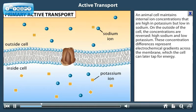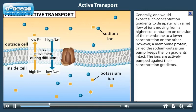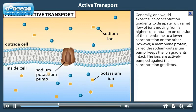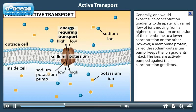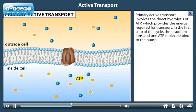Generally, one would expect such concentration gradients to dissipate, with a net flow of ions moving from a higher concentration on one side of the membrane to a lower concentration on the other. However, a membrane protein called the sodium-potassium pump keeps the ion gradients intact. The ions are actively pumped against their concentration gradients.